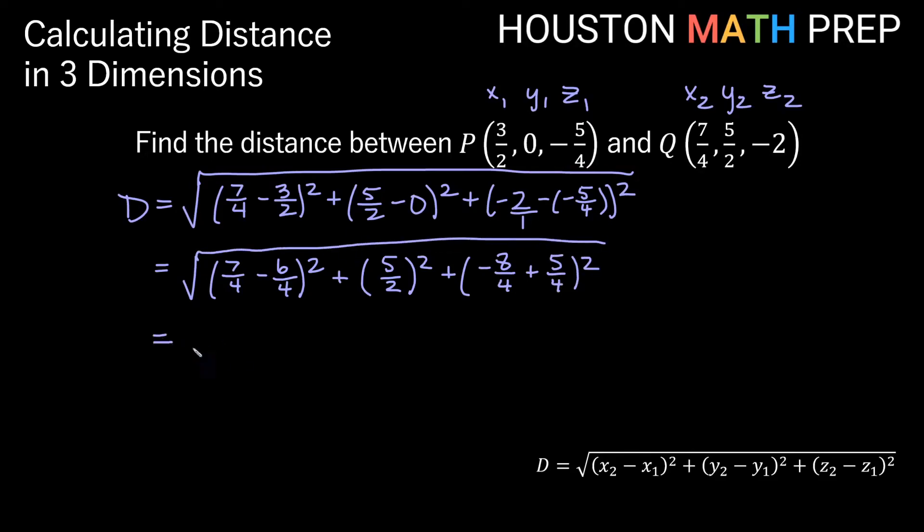Again, square root over all that, and now we can simplify to one term here. 7 minus 6 will give us 1/4 squared. We already have one single fraction in the y parentheses here, 5/2 squared, plus this -8 plus 5 will give us -3/4 squared. And now we just need to square all of this.